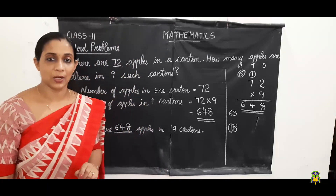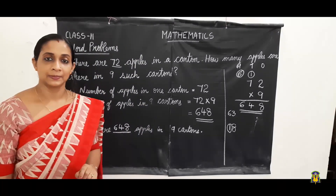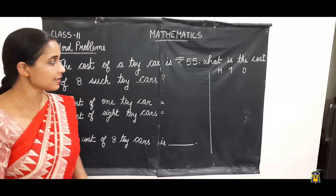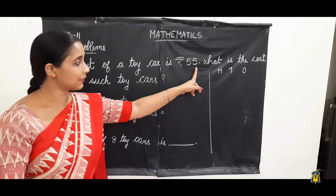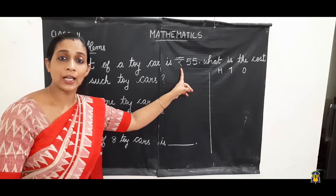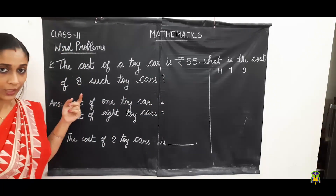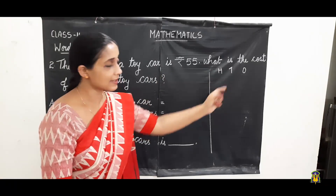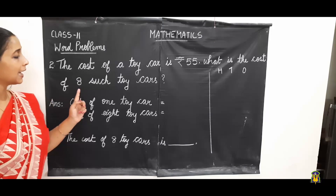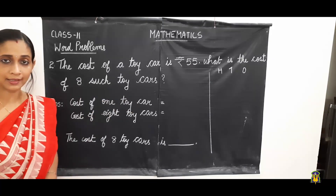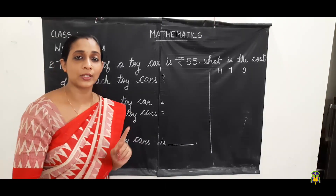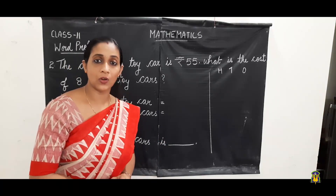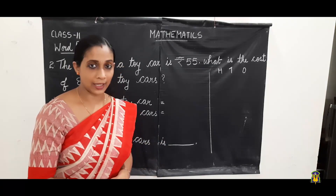Now let us do the next problem. The second question is: the cost of a toy car is rupees fifty-five. So the cost of a toy car is rupees fifty-five. What is the cost of eight such toy cars? The question is: the cost of one toy car is fifty-five rupees. We have to find out the cost of eight toy cars.